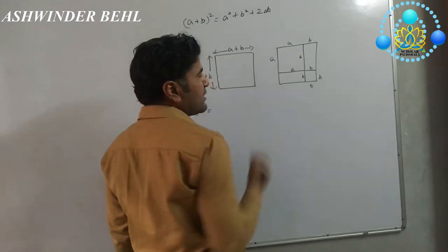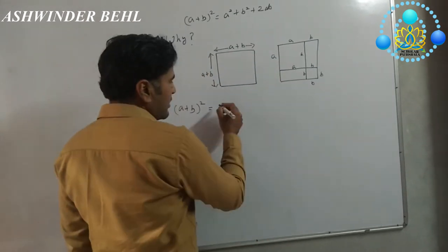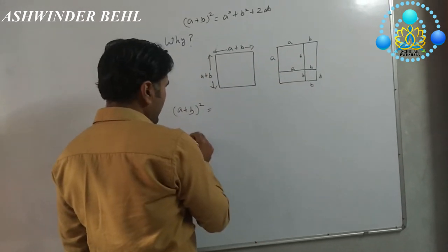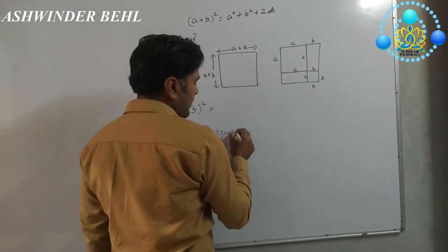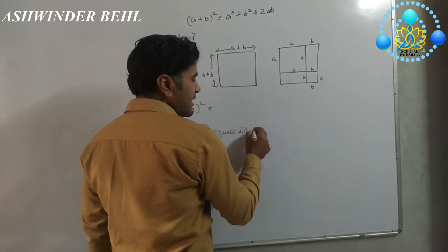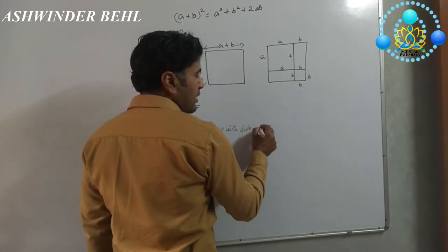So what do we get here? Area of square with side A plus B.